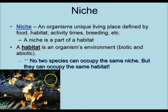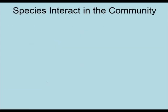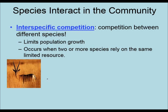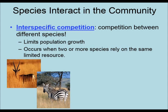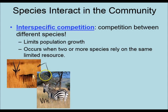No two species can occupy the same niche, though they can occupy the same habitat. If two species try to share a niche, you get competition. When two or more species compete for the same limited resource, we call it interspecific competition, which helps limit growth. For example, an ibex and a zebra both live in the same savannah and compete for the same grass. Sometimes the ibex will out-compete the zebra, and sometimes the zebra will out-compete the ibex, but there is constant competition between them for that same limited food source.